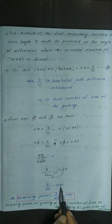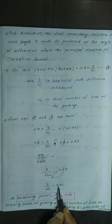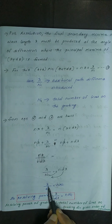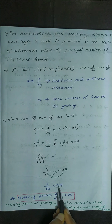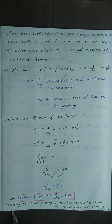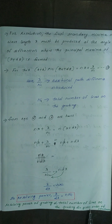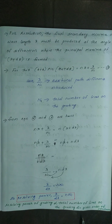Here n is the order of spectrum and N1 is the total number of lines on the grating. Therefore, the resolving power lambda by d lambda is directly proportional to N1. We say that the resolving power of a grating is directly proportional to the total number of lines on the grating for a given order of spectrum. This is the most important result.